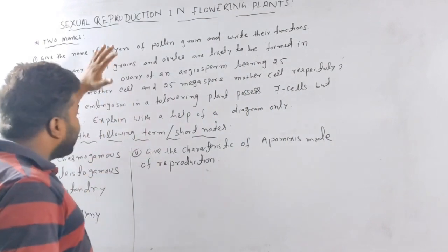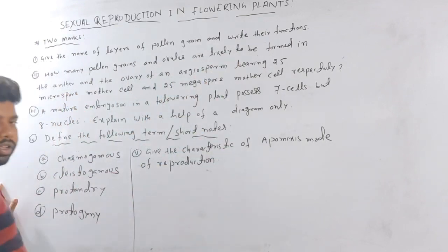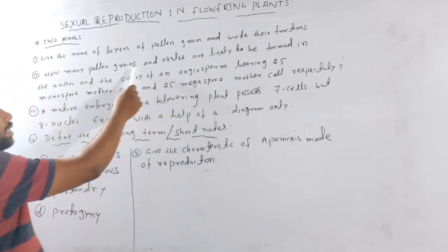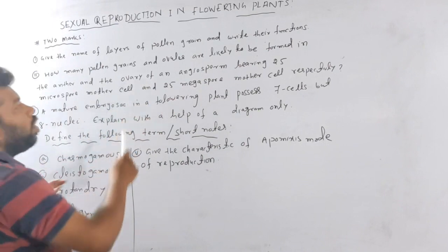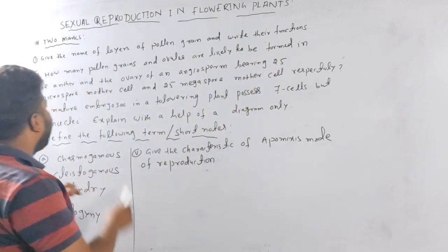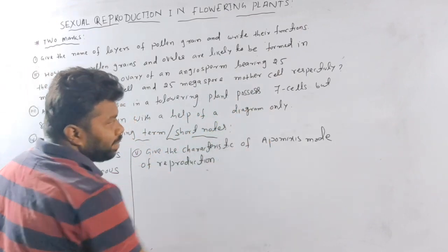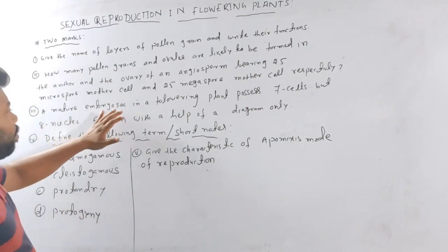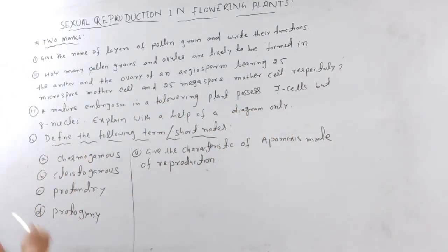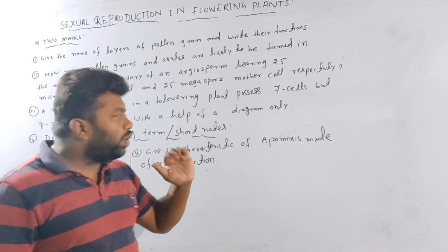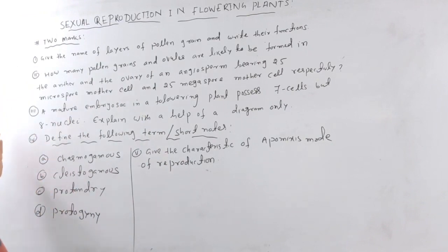The first question: give the name of the layers of pollen grains and write their function. Next question: how many pollen grains and ovules are likely to be formed in the anther and the ovary of the angiosperm bearing 25 microspore mother cells and 25 megaspore mother cells respectively? Next question: the mature embryo sac of a flowering plant possesses 7 cells but 8 nuclei — explain with the aid of a diagram.